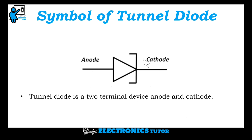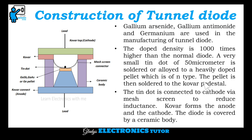This is the symbol of Tunnel Diode. Tunnel Diode is a two terminal device — anode and cathode. This is the construction of Tunnel Diode. Gallium Arsenide, Gallium Antimonide, and Germanium are used in the manufacturing of Tunnel Diode.